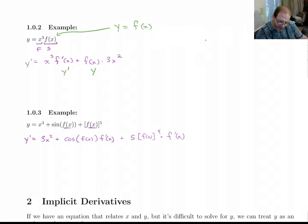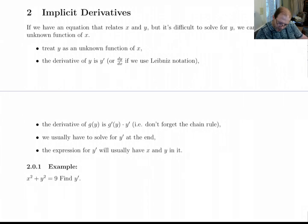Instead of having f(x) there, this would be y and this would be y'. And what we would get out of this would be an equation we could solve for y'. So here's the general information about it. If we have an equation that relates x and y, but it's difficult to solve for y, we can treat y as an unknown function of x. The derivative of y is y', or you could use dy/dx if you want to. Don't forget the chain rule. And usually you have to solve for y' at the end. And what's usually going to happen here is your expression for y' will have an x and a y in it.